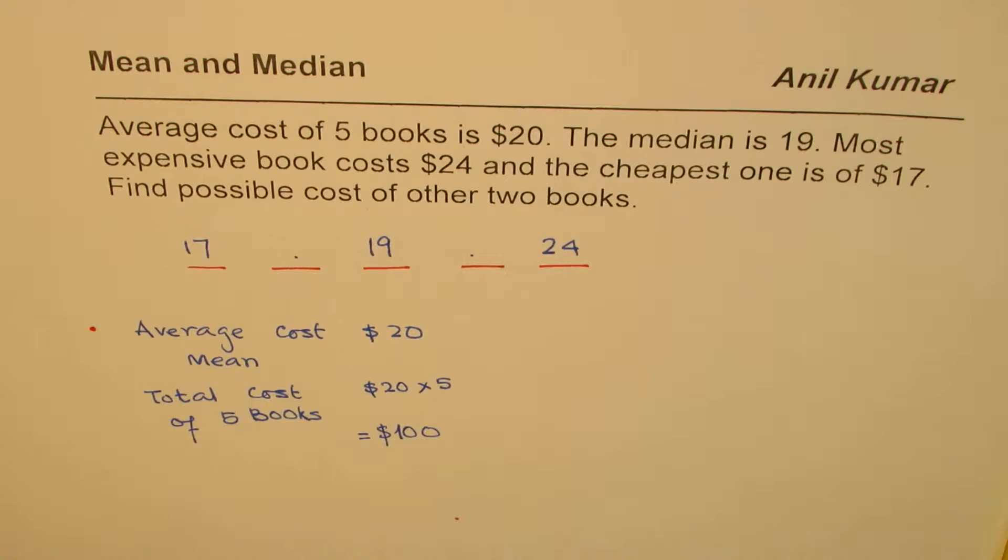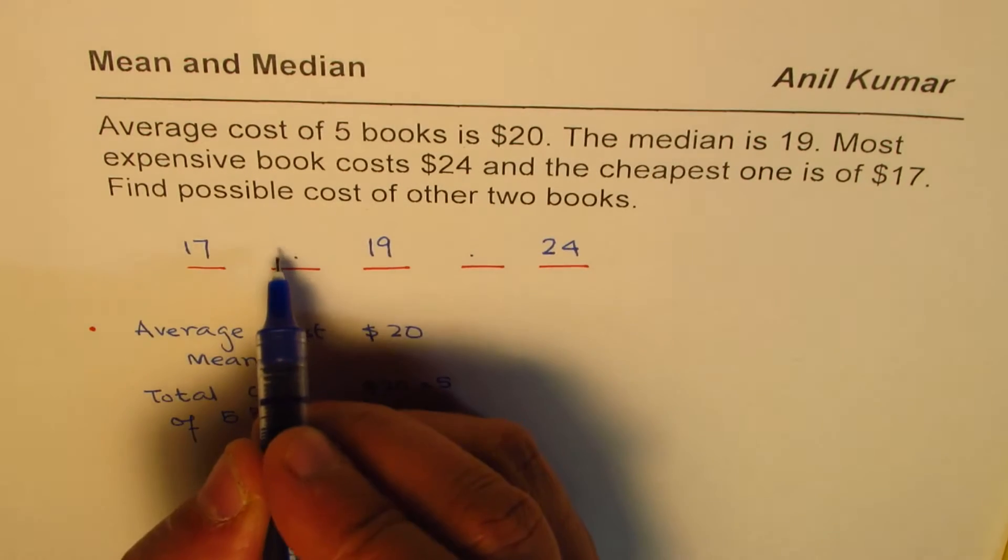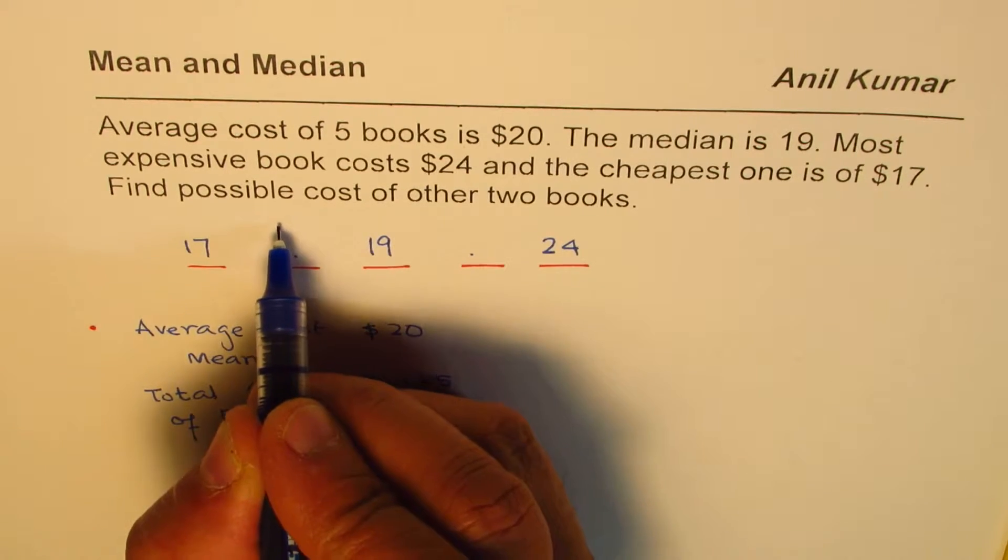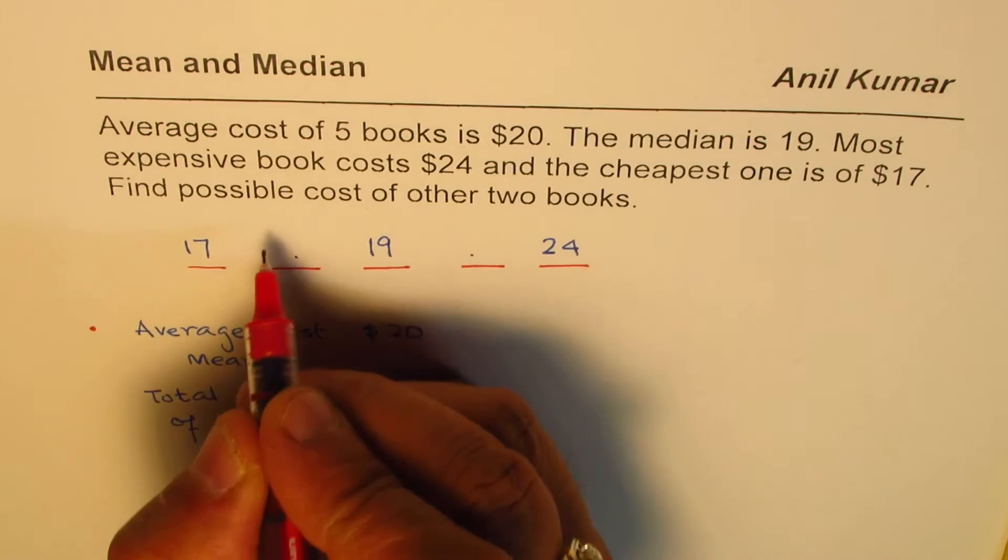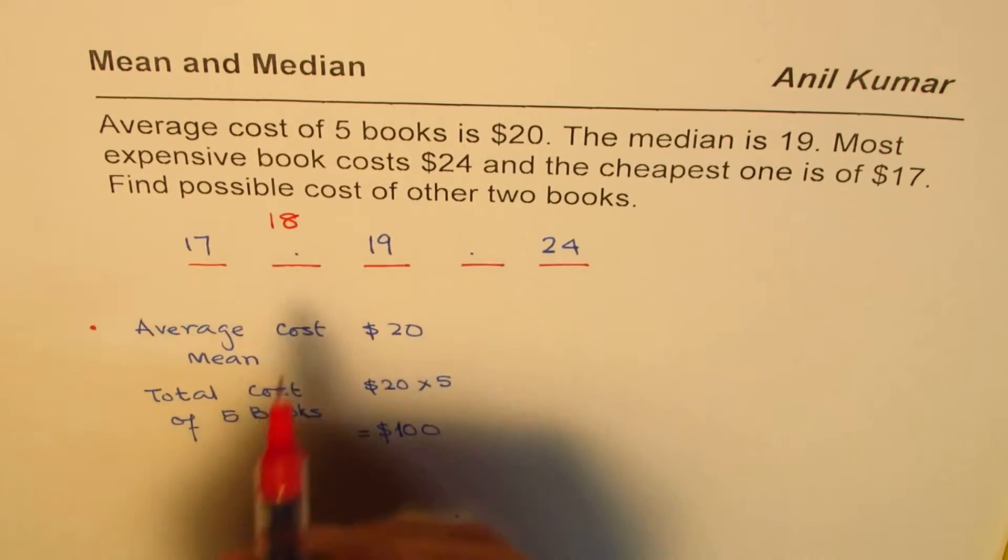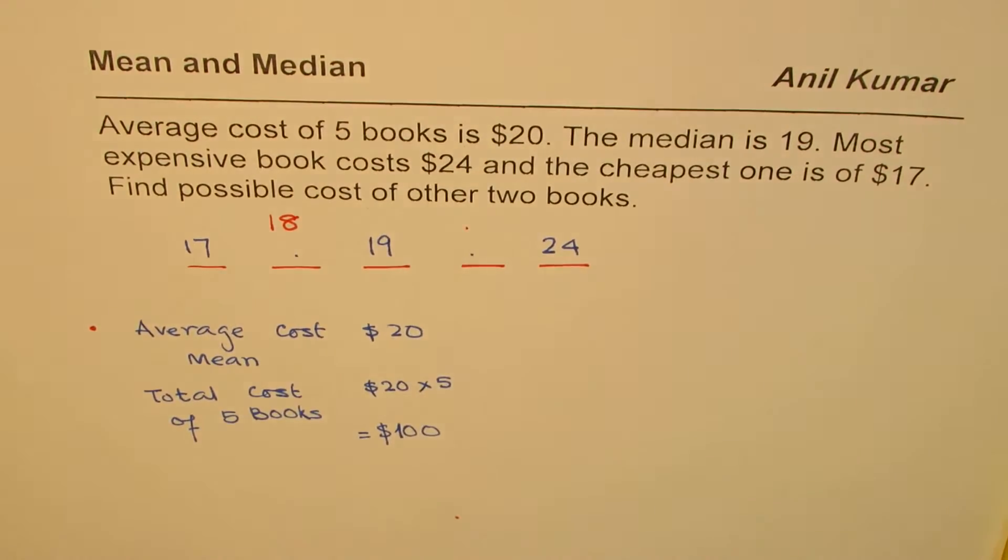Now it is very interesting. So we could have many combinations. Since I am saying that I have arranged them in increasing order, let me assume this cost to be 18. So let's start by placing some value. So I will take this cost as 18 and then calculate. If I say the cost of this book is 18, what is that cost? Let us calculate.